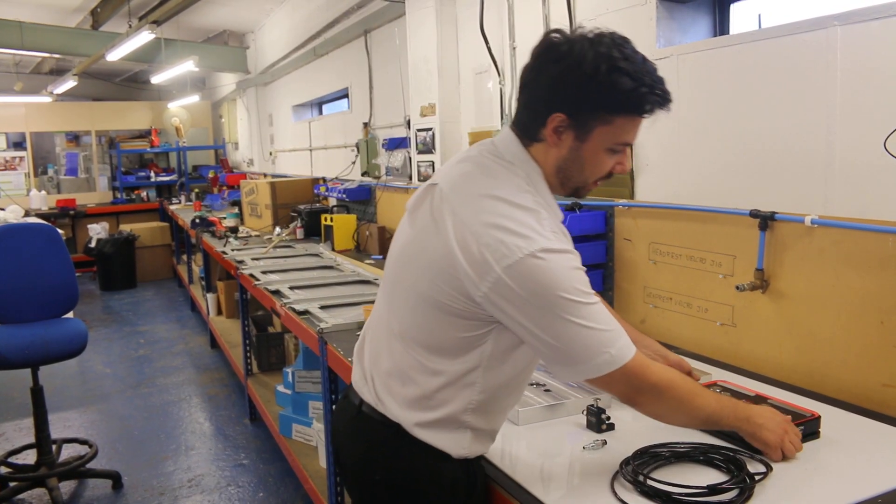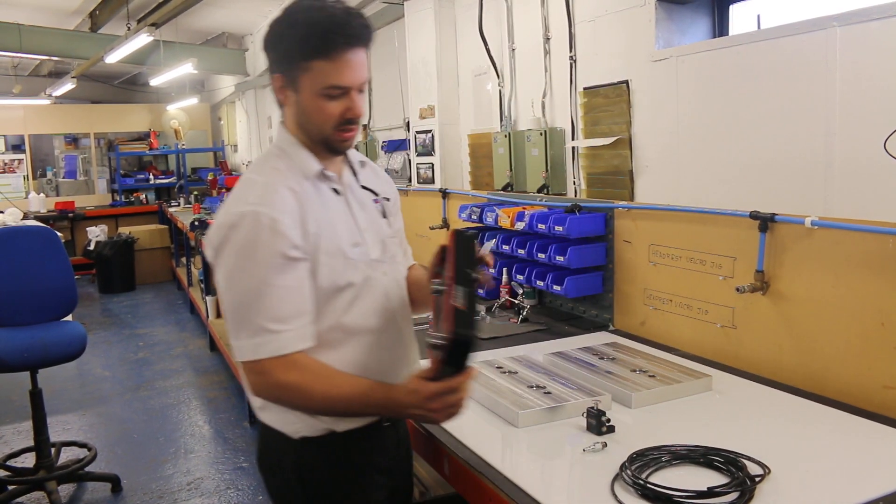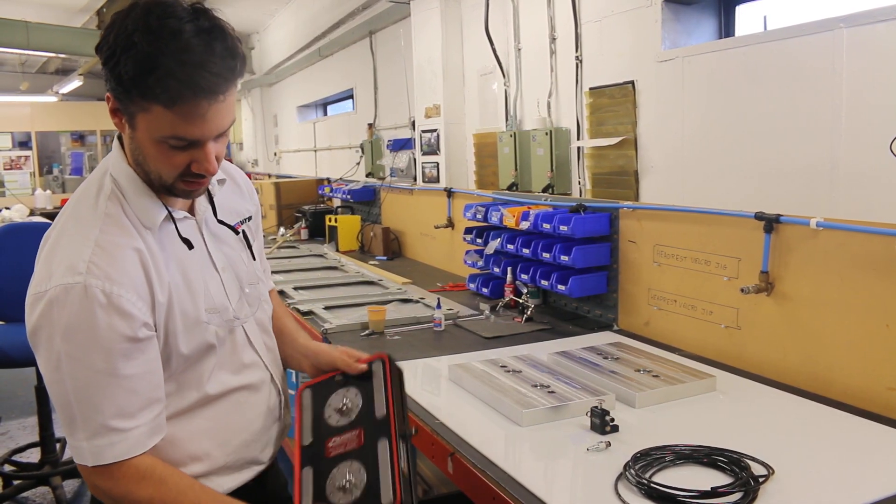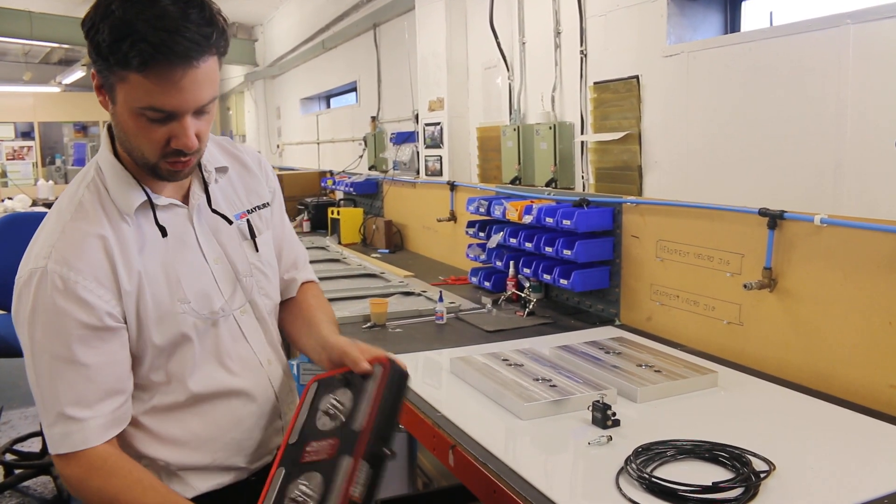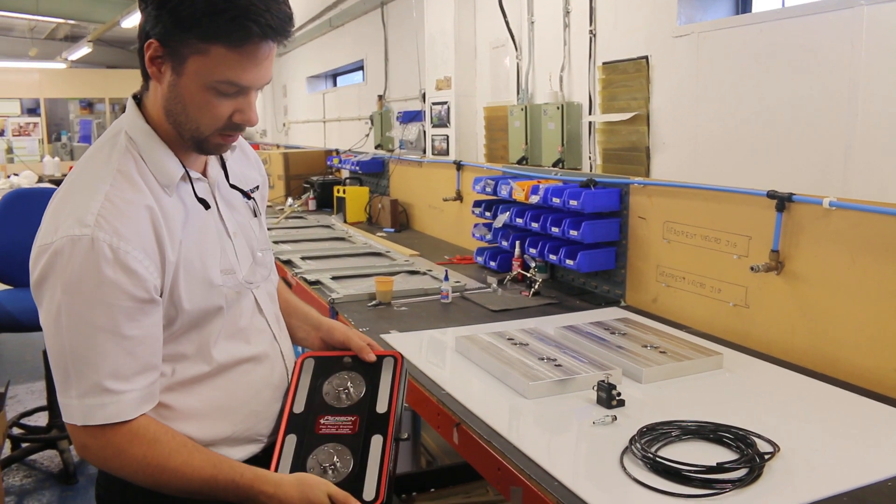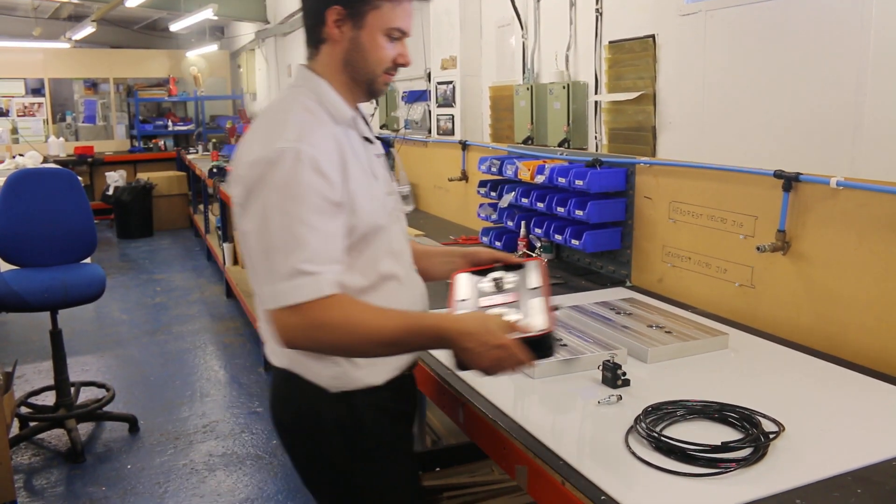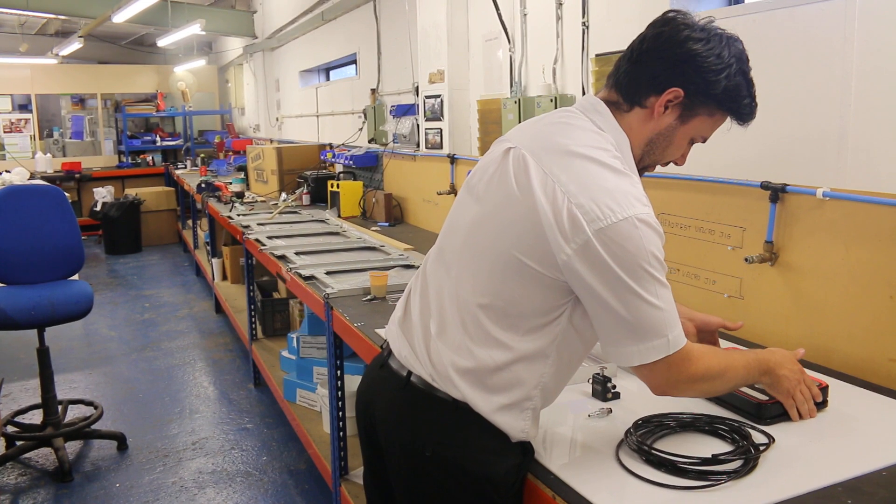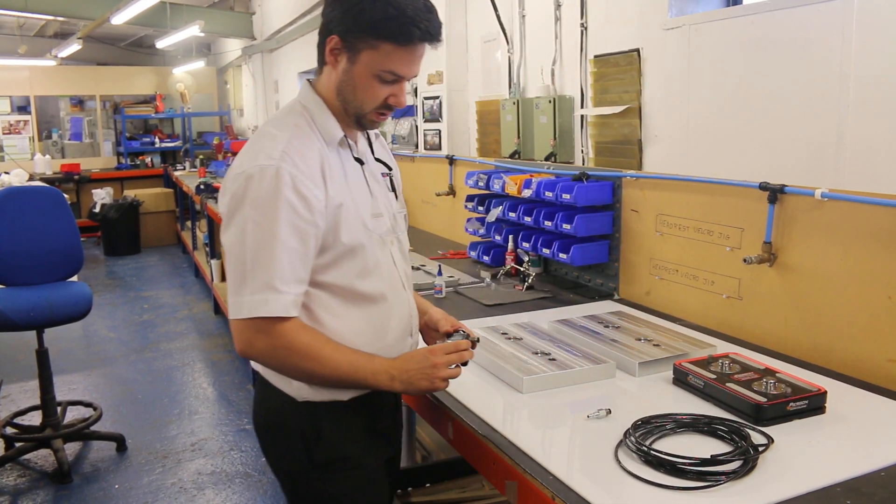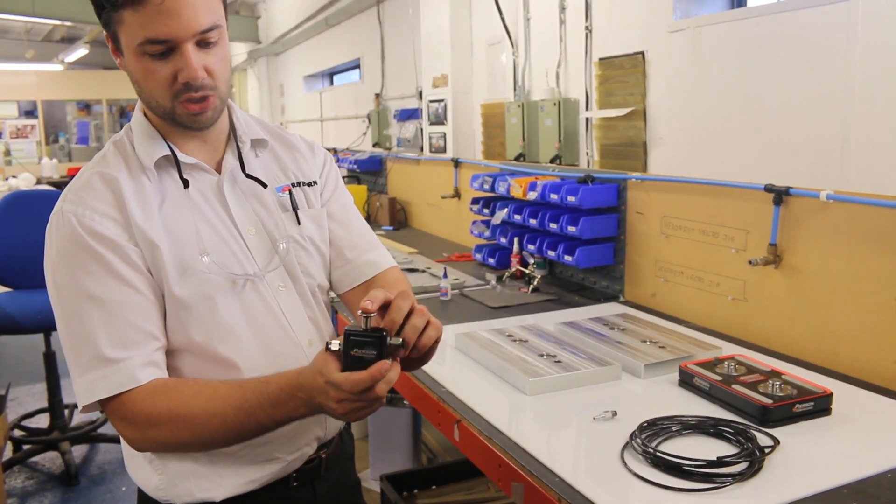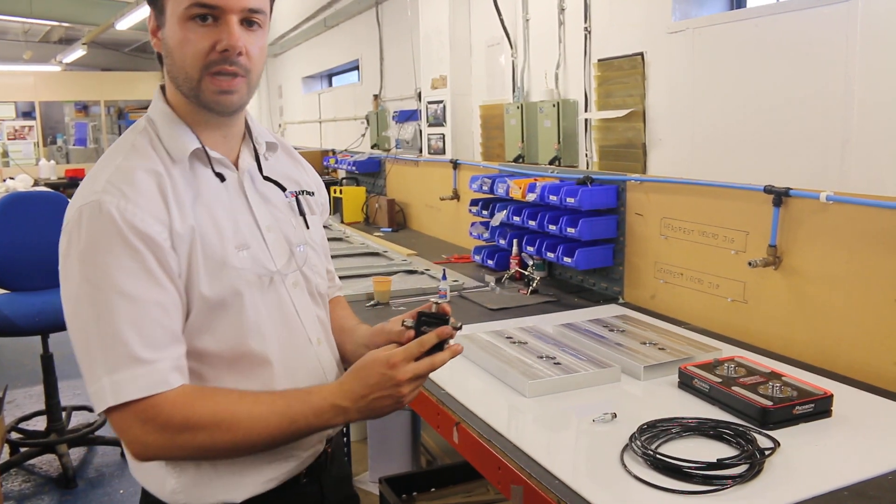It comes with a Pearson Workholding pallet, which you've probably seen on YouTube, Google, and the Pearson Workholding website. It comes with the filtration, which is really the keystone for the unit - an on and off input and output valve.